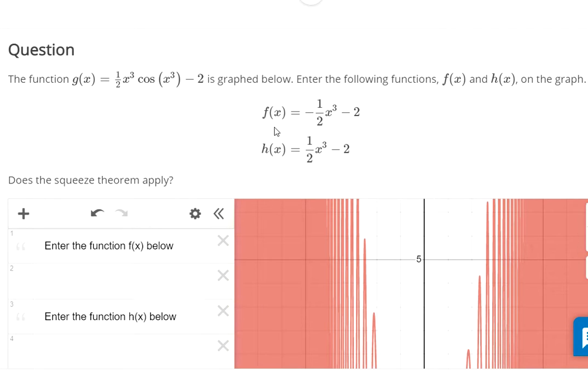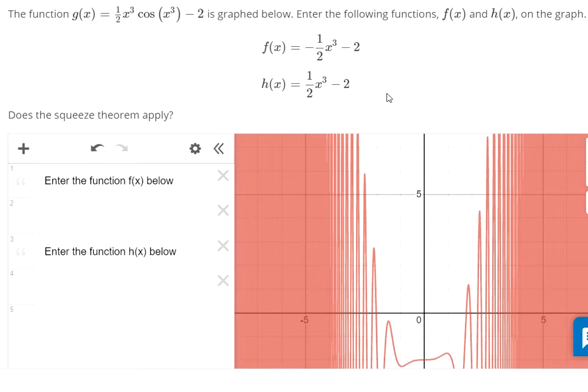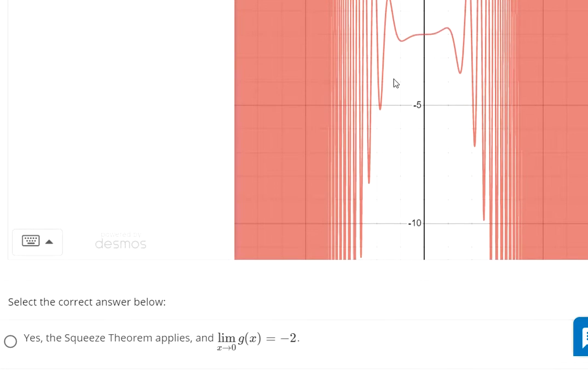Find two functions that are above and below your original function—that's the squeezing part. We're trying to find something directly above and directly below. But they have to be special because there's an infinite amount of things that are bigger. They have to be special in that their limits both equal each other. If that's the first introduction you've heard to the squeeze theorem, then go read the textbook.